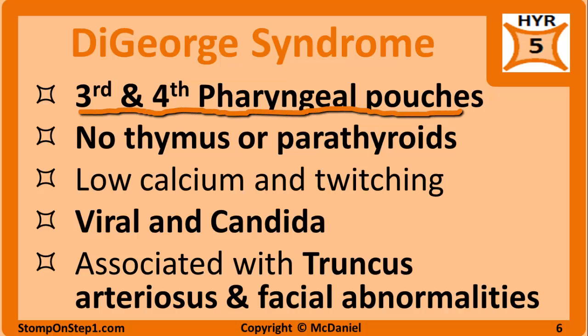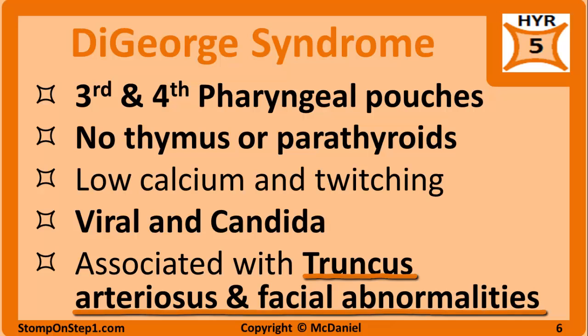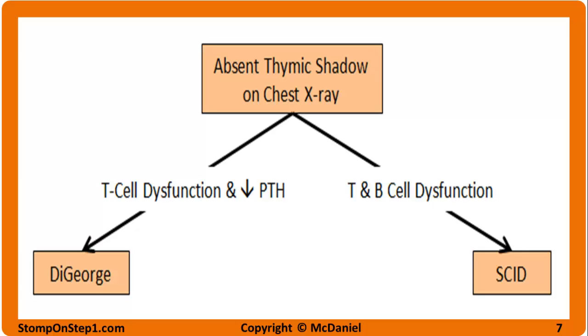DeGeorge syndrome involves abnormal development of the third and fourth pharyngeal pouches, causing absence of the thymus and parathyroid glands. Absence of the thymus means T cells cannot mature, and absence of the parathyroid glands causes low parathyroid hormone. This congenital hypoparathyroidism leads to low calcium levels presenting with twitching and spasms. Low T cells lead to susceptibility to viral and Candida infections. DeGeorge also associates with truncus arteriosus and facial abnormalities such as cleft palate or low-set ears. A key buzzword is absence of the thymic shadow on chest x-ray, though this finding is not specific to DeGeorge.